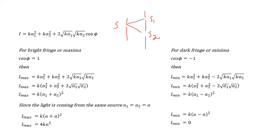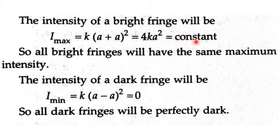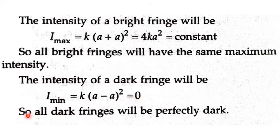If you have any confusion you can ask, I will re-explain it. The intensity of the bright fringe is Imax = K(A + A)² = 4KA². Here 4, K, and A are all constants, so the intensity of the maxima is a constant value — all bright fringes will have the same maximum intensity. For the dark fringe, I_min equals 0, meaning all dark fringes will be perfectly dark.